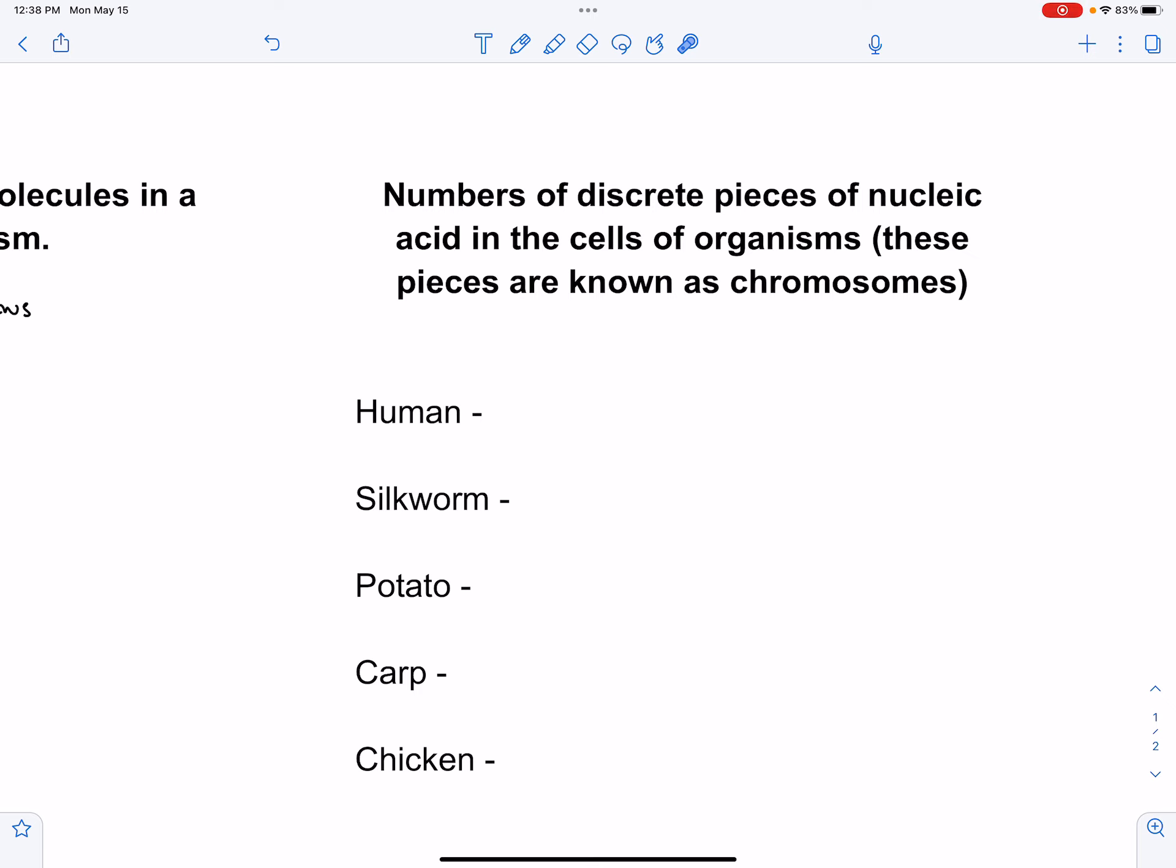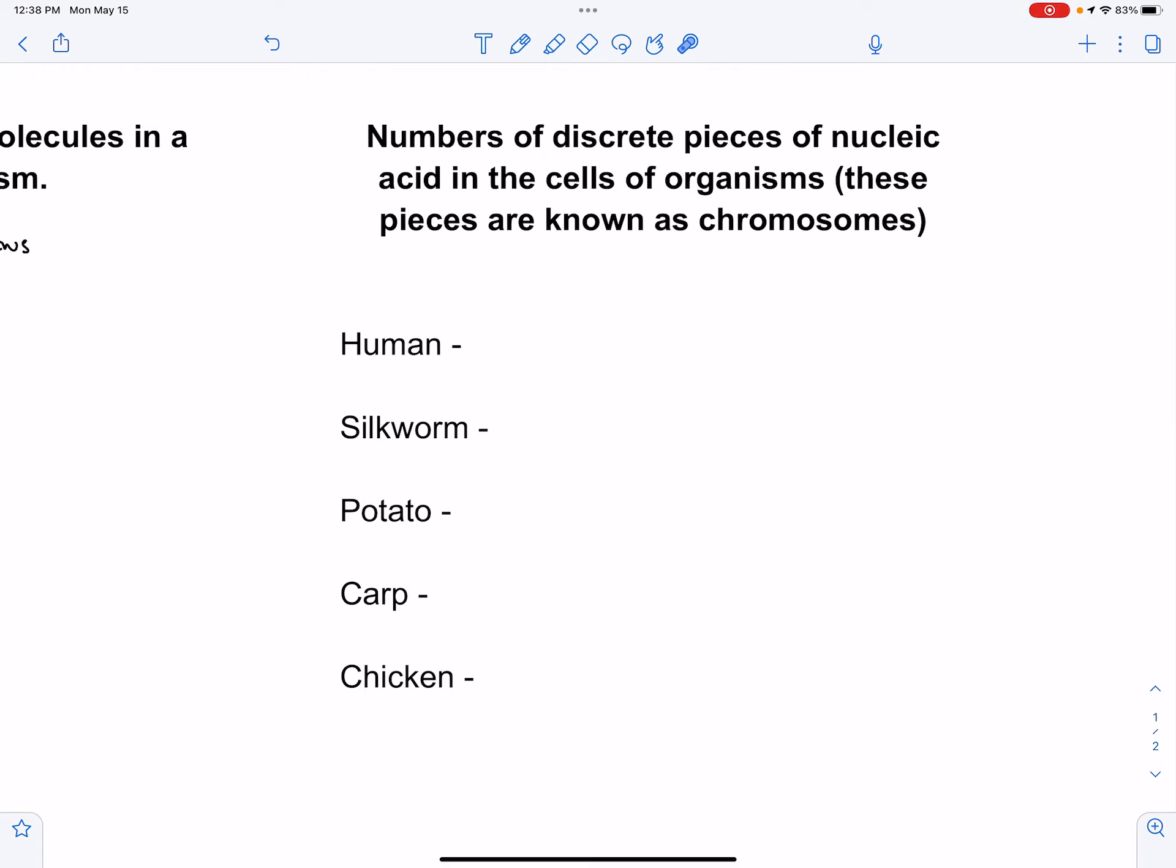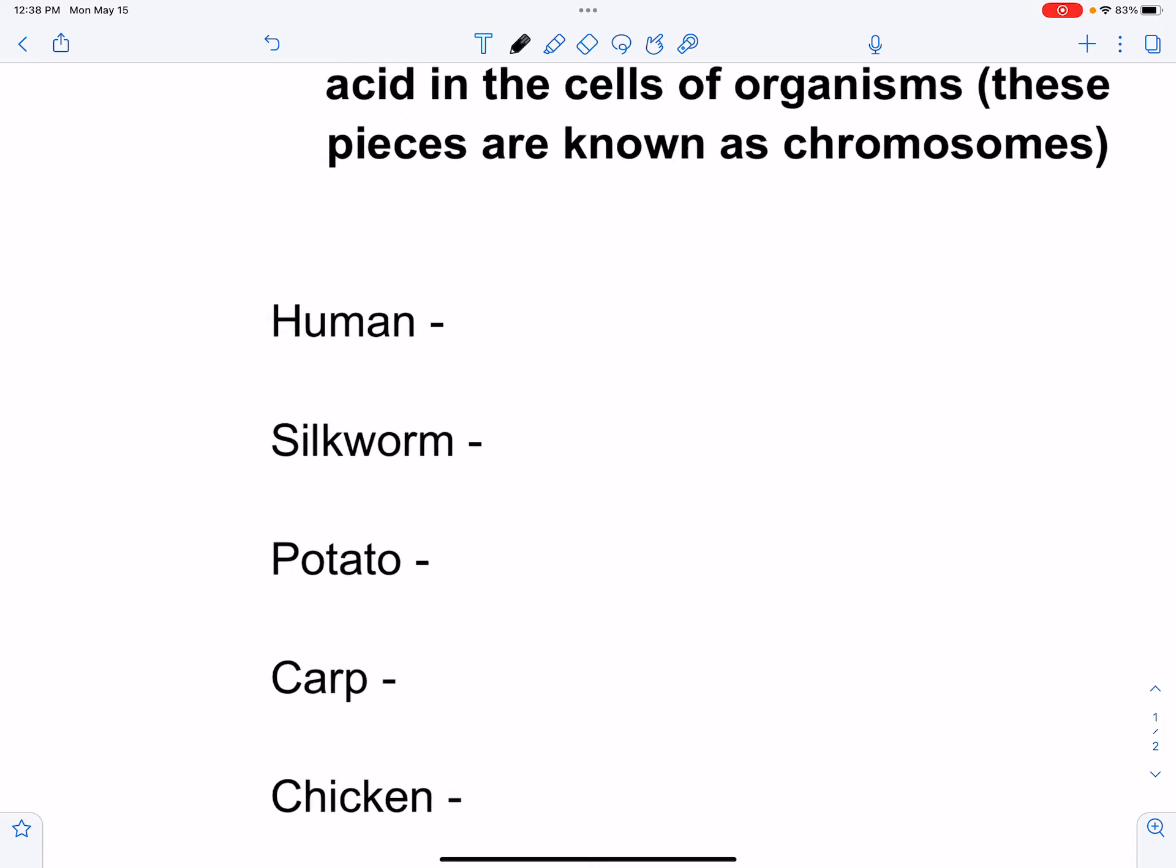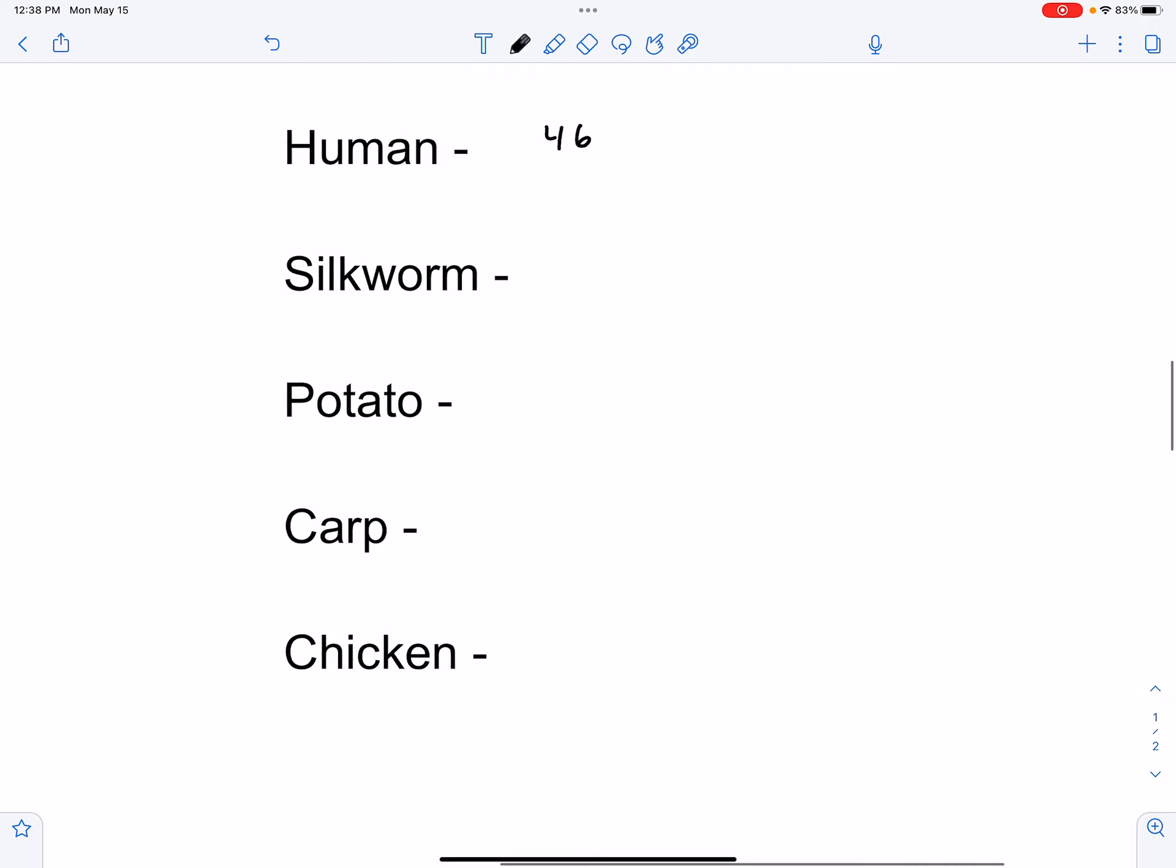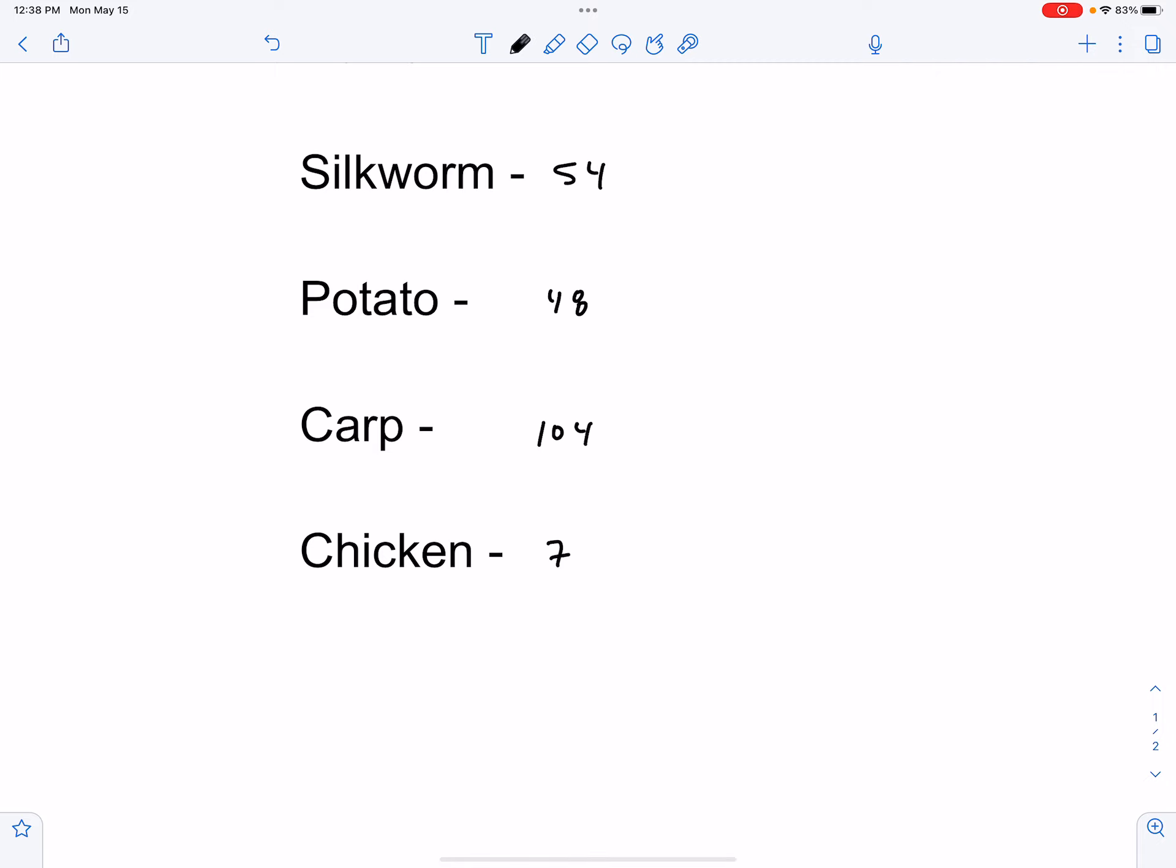A hundred years ago, between the discovery of DNA as the molecule of heredity and when people thought that proteins were these action enzymes as well as encoding the genetic information, if you look at the number of chromosomes as discrete pieces of nucleic acid in organisms, you all know that humans have 46 chromosomes. Silkworms have 54, potatoes have 48, carp have 104, and chickens have 78.